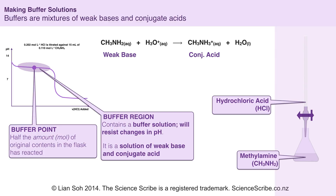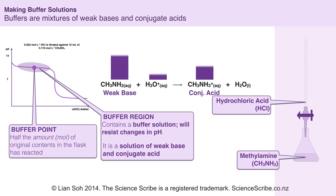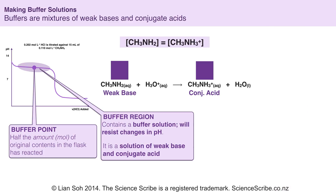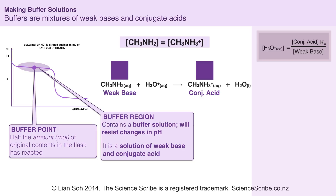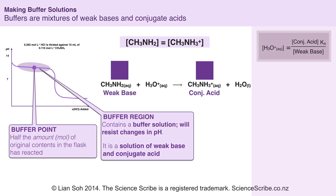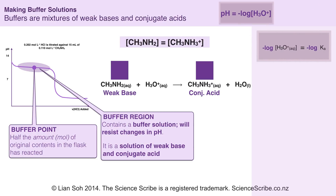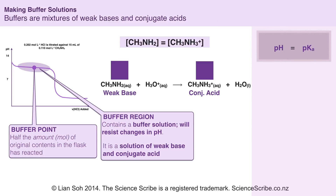In the middle of the buffer region I still have a buffer point where half of my original weak base has reacted to give an equal amount of conjugate acid. Because I have the same amount of weak base and conjugate acid, their concentrations would be the same as well. Using the same formula for finding the concentration of hydronium ions in any buffer solution, when the values for conjugate acid and weak base are equal they cancel out and give one. And just like before, taking the negative log of both sides gives pH on the left and pKa on the right. This means that even though I have a weak base versus strong acid titration, the pH at the buffer point is still equal to the pKa value.